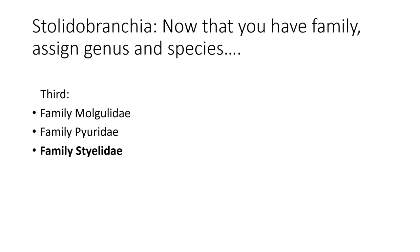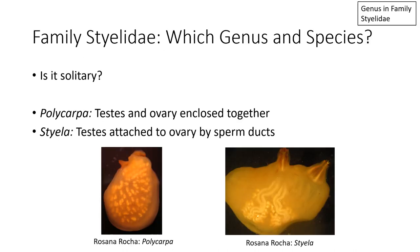The last family to discuss is Family Styelidae. If it's a solitary member of Family Styelidae in the order Stolidobranchia, there are two genera to think about: Polycarpa and Styela. In Polycarpa, the testes and ovaries are enclosed together in the same membrane — each white structure is what we call an ovotestis — because the male and female gonads are enclosed together in the same membrane.